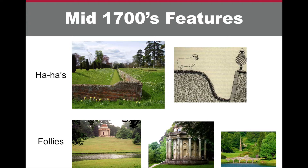The English also included two main structures in their designs: ha-has and follies. A ha-ha is a fence to keep cattle or sheep in, but a ditch is dug where the fence gets built so that the fence does not obscure the view of the large lawn. A folly is a constructed building that is primarily for decoration or an accent in the landscape. A folly would be carefully placed along with the trees to make sure there was a new view around each wind of a path.